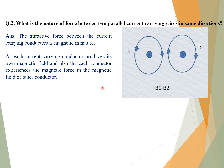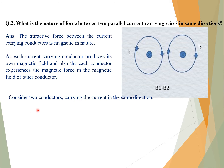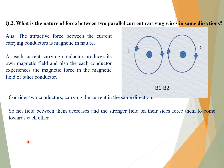Each current-carrying conductor produces its own magnetic field. So both current-carrying conductors produce their own magnetic fields, and the magnetic field of one conductor applies force on the other. When two conductors carry current in the same direction, the net magnetic field between them decreases, and the stronger field on their outer sides forces them to come towards each other.